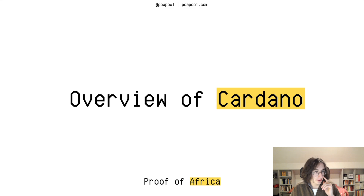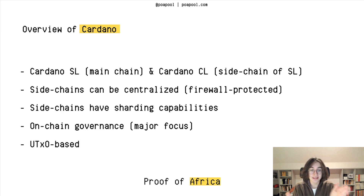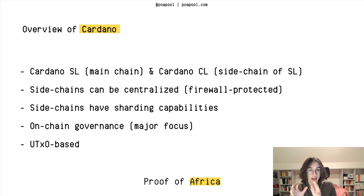Cardano is quite different. Cardano is made of Cardano SL and Cardano CL. Cardano SL is the settlement layer — that's where your ADA sits. You can compare Cardano SL to Bitcoin: it's a highly secure chain specifically made for transactions and storing assets, nothing more. There's no smart contract execution on there. That's for Cardano CL, the Cardano computational layer, which is essentially a sidechain of the settlement layer.